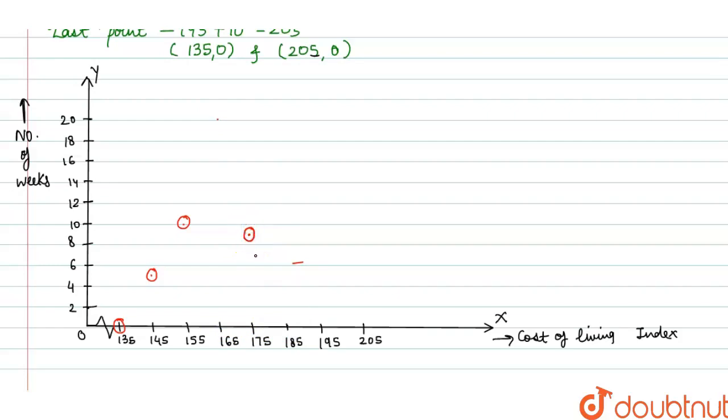Next is (185, 6), this point. And lastly (195, 2), and then (205, 0). I have mentioned all the points. Now we will connect all these points.